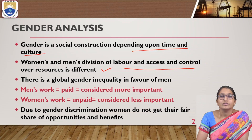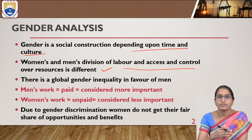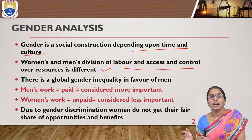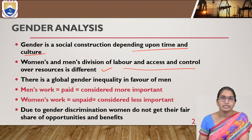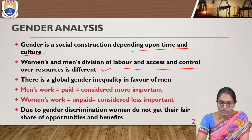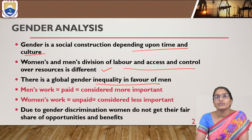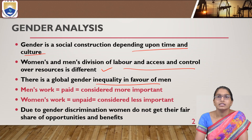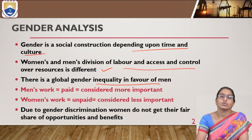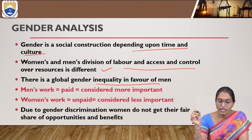This is also limiting to the access of control as well as access of chances and control over sources. Each gender has their own access as well as the control or availability of different resources. There is a global gender inequality in favor of men — by default it is happening, but equality should be there between both.